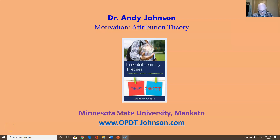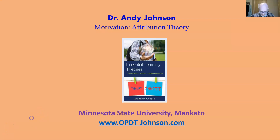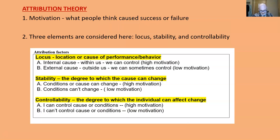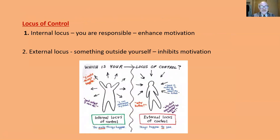Attribution theory explains motivation as it relates to how people arrive at or determine the causal factors related to their success or failure. Three elements are considered here: locus, stability, and controllability.